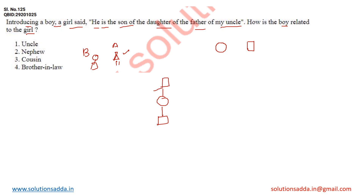So there is an uncle, and this girl also belongs to the same family. The girl is saying that this person is her uncle, so there must be another child. It's not specific whether male or female, but that girl is the child of another child of this person. So the girl is placed here — this is boy B and this is girl A.